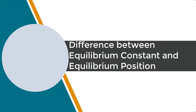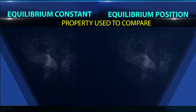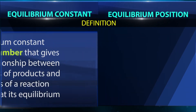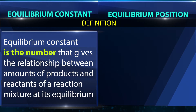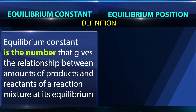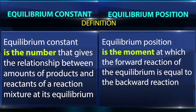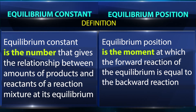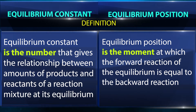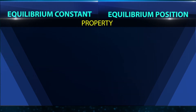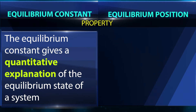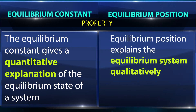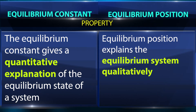The difference between equilibrium constant and equilibrium position. The equilibrium constant is the number that gives the relationship between amounts of products and reactants of a reaction mixture at its equilibrium. The equilibrium position is the moment at which the forward reaction of the equilibrium is equal to the backward reaction. The equilibrium constant gives a quantitative explanation of the equilibrium state of a system, while equilibrium position explains the equilibrium system qualitatively.